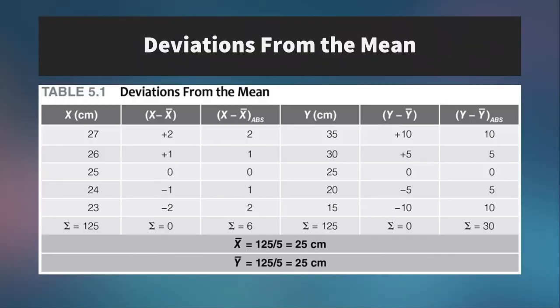Okay, so here's a table looking at deviations from the mean. So we have two different sets of data. We have scores denoted by X and then by Y, and they are two different data sets. And you'll see just by looking at them, we go 27, 26, 25, 24, 23 for the X values. And you can see that 25 is right in the middle, so that's probably going to be the mean. And same thing with the Y values, but notice how much farther they are spread apart.